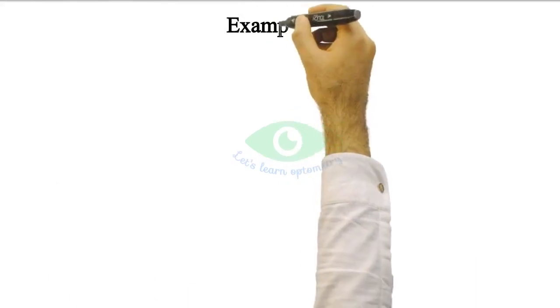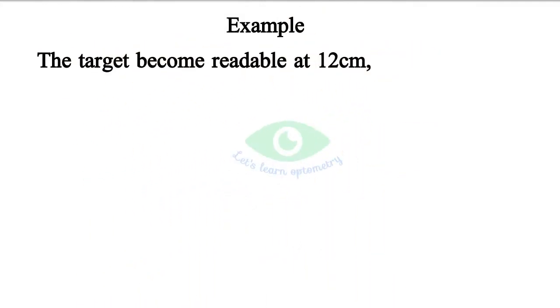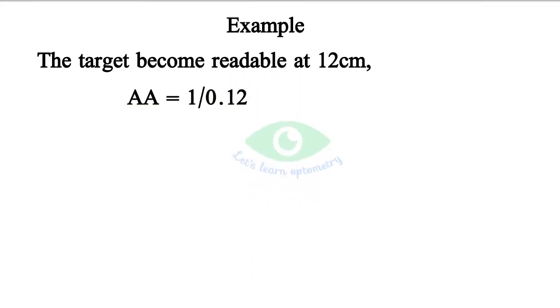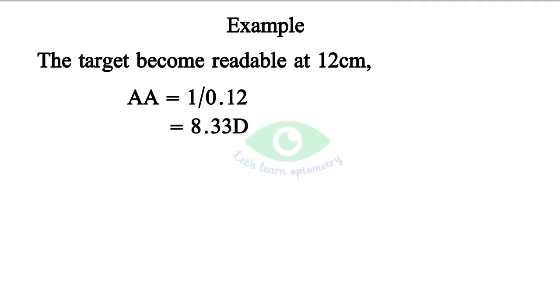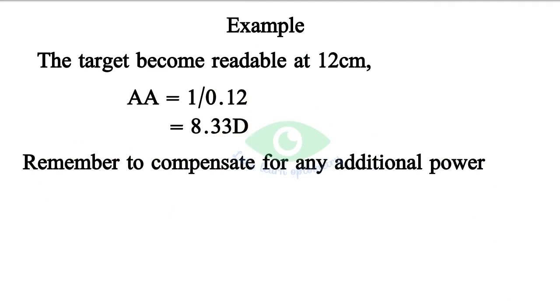Example: If the target becomes readable at 12 centimeters, then the amplitude of accommodation is 1 over 0.12 meters, which is 8.33. So the amplitude of accommodation here is 8.33 diopters.